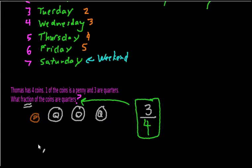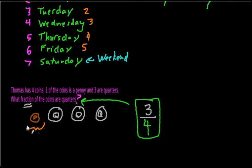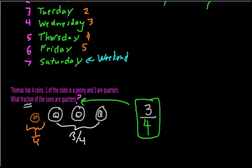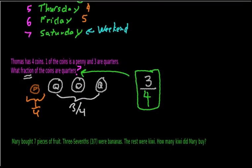I think this was a bit more simple than the first one. Here we were just talking about four coins: one of them being a penny, three are quarters, so three-fourths of the coins must be quarters. And conversely, if three-fourths of the coins are quarters, that means one-fourth of the coins are pennies. So one-fourth are pennies and three-fourths will be quarters. Let's move on to the next problem.